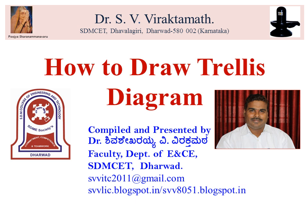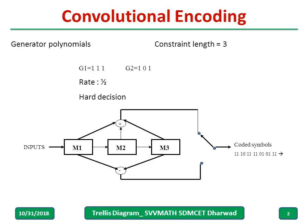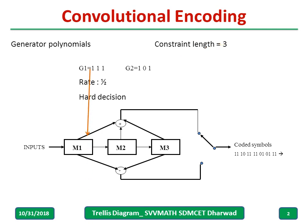Welcome to my channel. In this video lecture we are going to discuss how to draw the Trellis diagram for a given encoder. This shows an example of a convolutional encoder. We have a constraint length equal to 3, meaning g1 and g2 each have 3 bits — for example, g1 is 111 and g2 is 101 — and the constraint length of 3 indicates the connections.